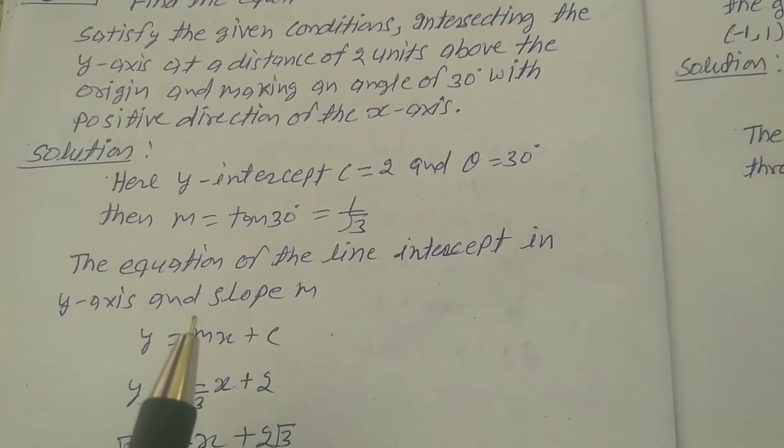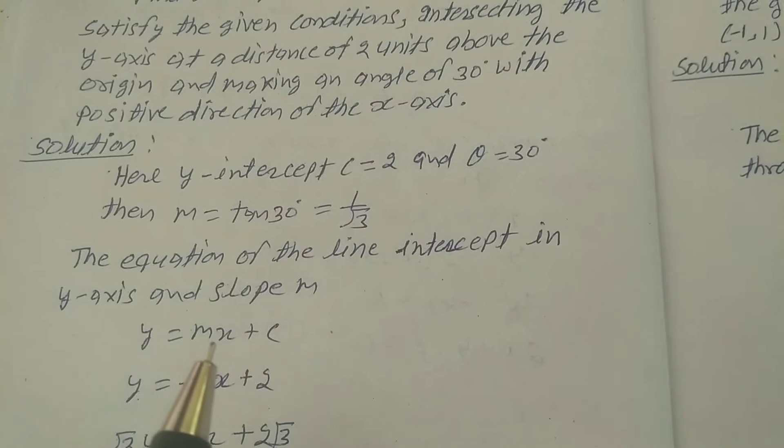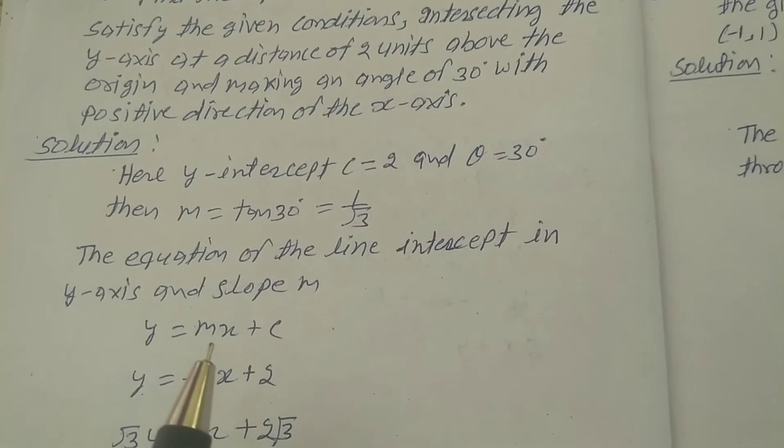The equation of a line intersecting the y-axis with slope m uses the formula: y equals mx plus c.